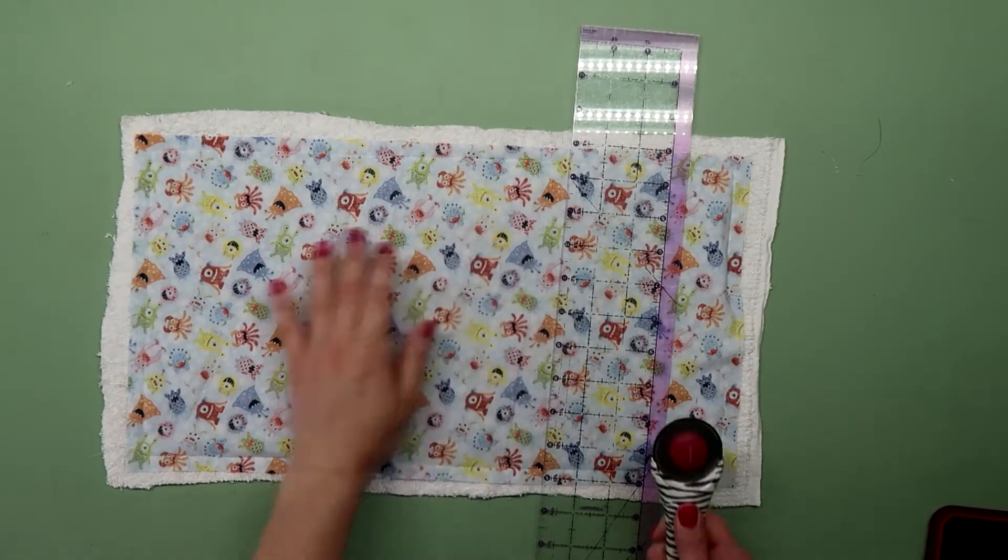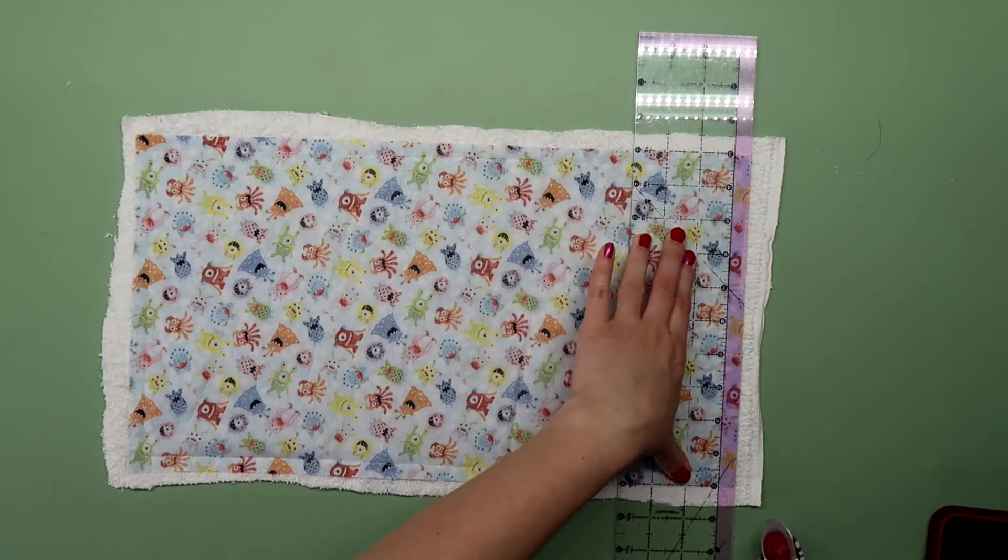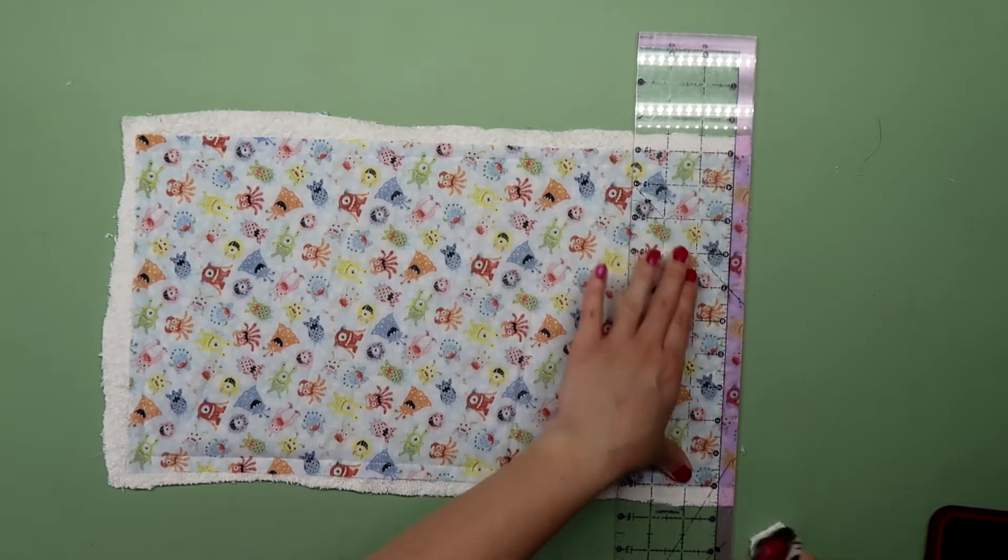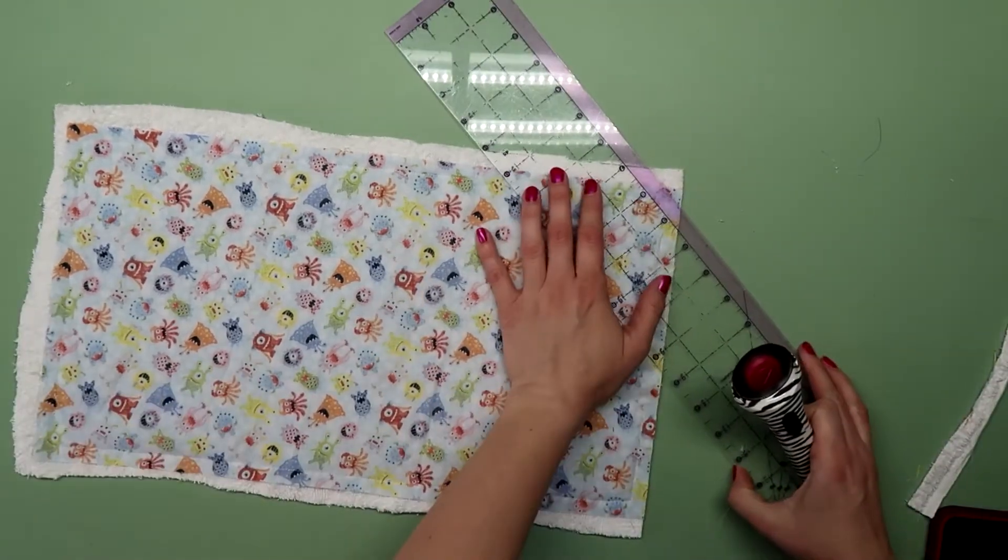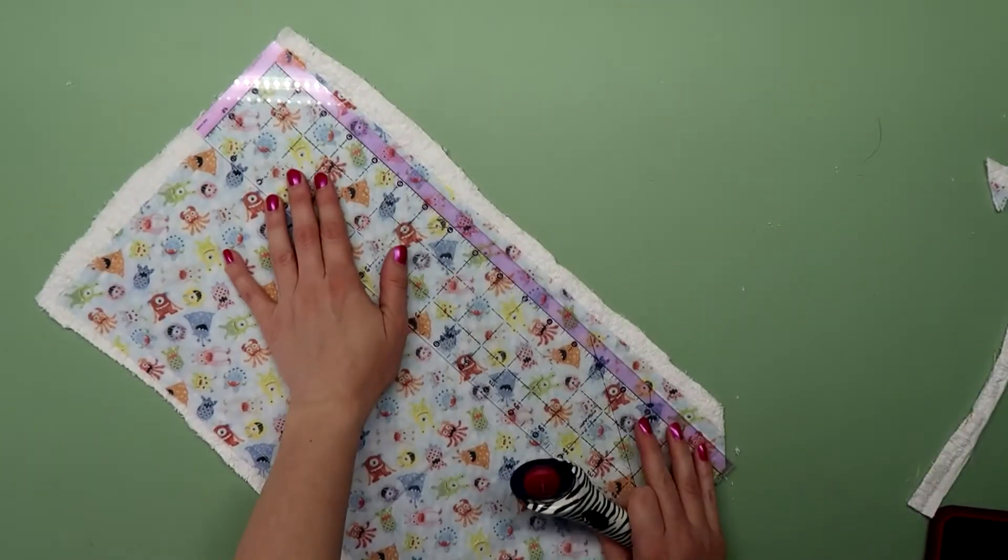Grab a ruler and a rotary cutter. Place the ruler along one edge of the printed cotton and trim off any extra fabric. Trim all four corners at an angle. This will help everything lay flat.